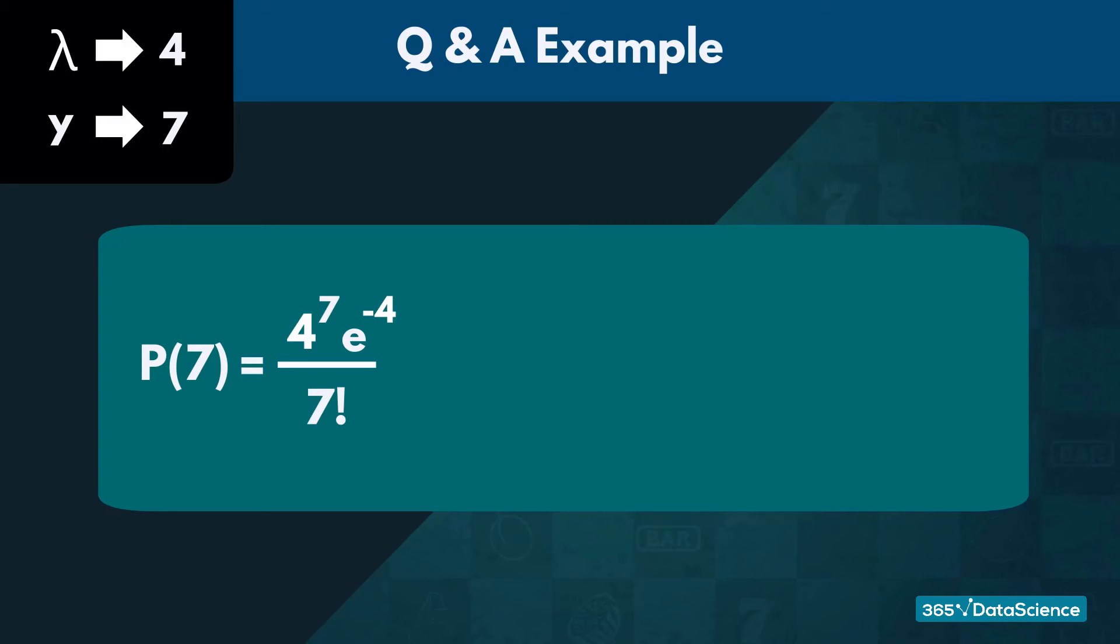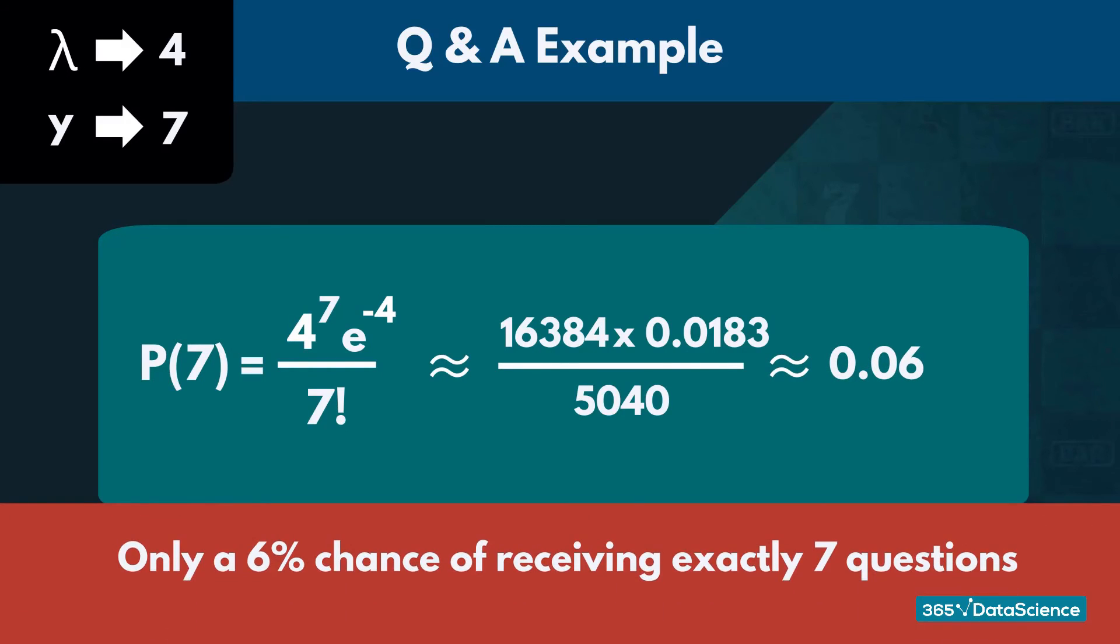That approximately equals 16,384 times 0.0183, over 5040, or 0.06. Therefore there was only a 6% chance of receiving exactly 7 questions.